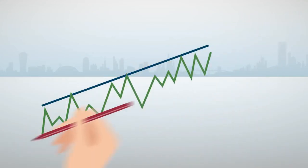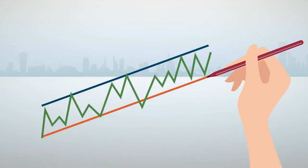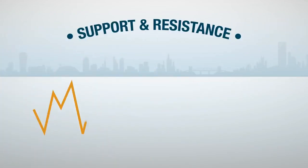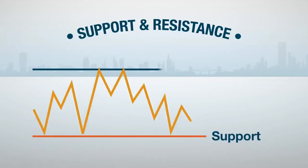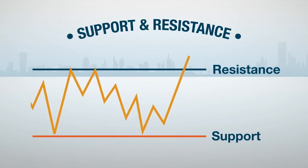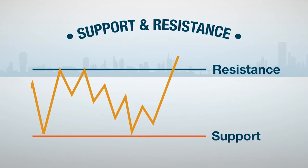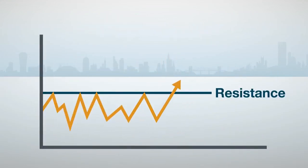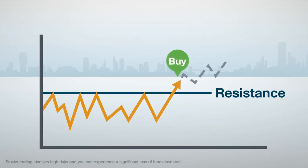Investors can also draw lines to connect highs and lows. These lines are known as support and resistance levels. Support and resistance are price levels that the stock has had trouble breaking through. If a stock breaks through support or resistance, it could be a signal to enter or exit. For example, suppose a stock breaks through resistance, a level it repeatedly pulled back from in the past. Because it broke through resistance, an investor may believe there's a good chance the stock will continue to rise, so broken resistance may be a good time to enter.